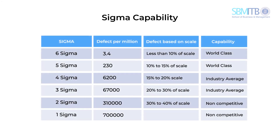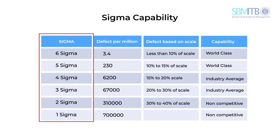Another way to express capability is using sigma capability. The 6 sigma method provides a sigma capability level to show the performance level of a process. The highest level is 6 sigma and the lowest is 0. Industry standard is around 3 to 4 sigma level, while world class level is 5 to 6 sigma. The best way to calculate sigma capability is using software like Minitab.